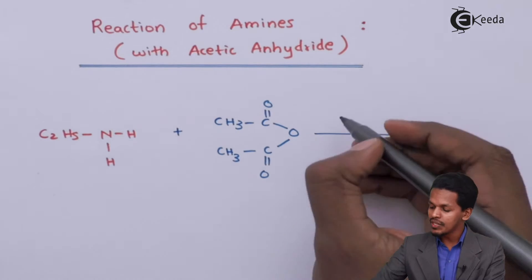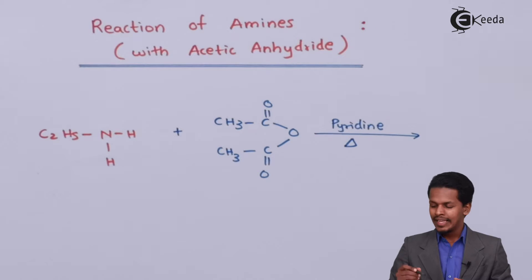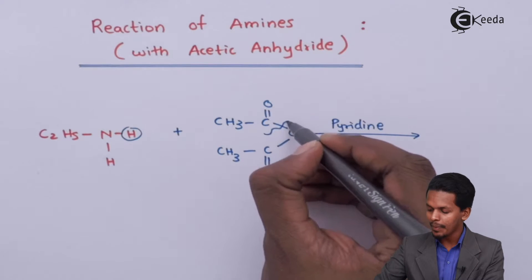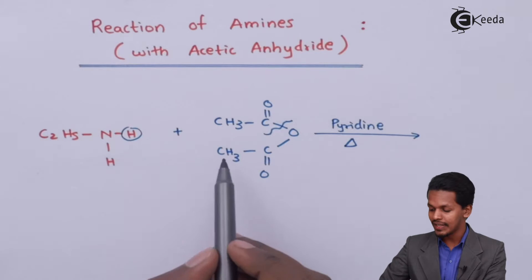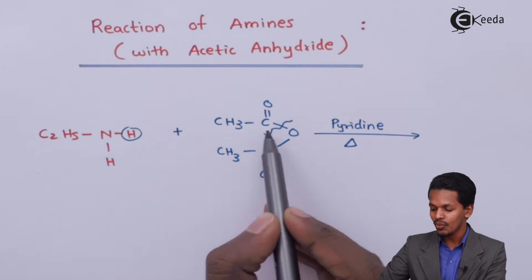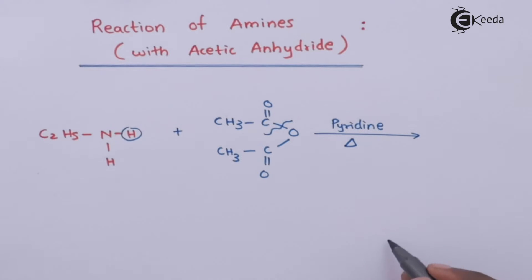The solvent that we are using here is Pyridine. At higher temperature, the reaction proceeds such that this hydrogen, along with breaking of this molecule, we get H with CH3COOH, which will be removed as a byproduct. This is known as acetic acid, CH3COOH.